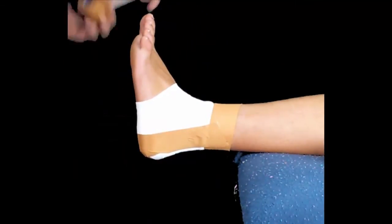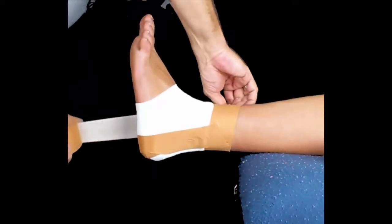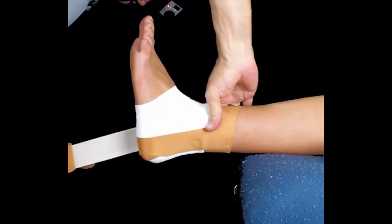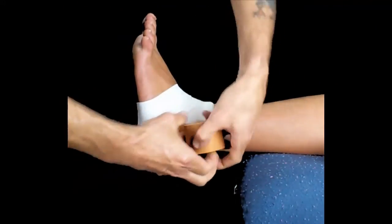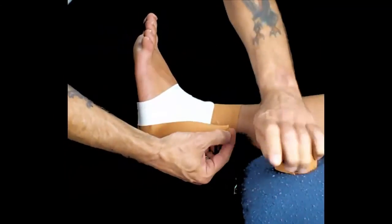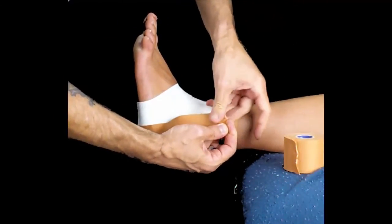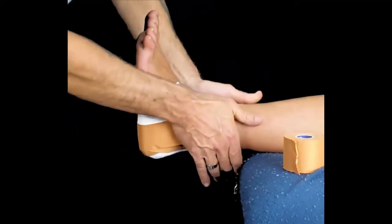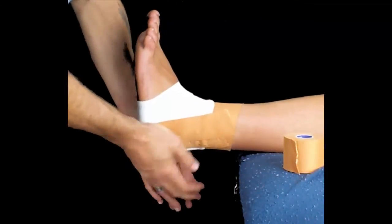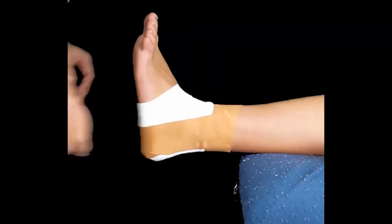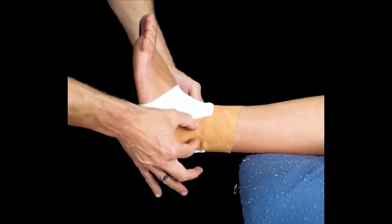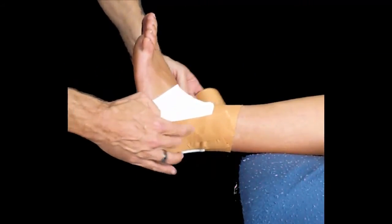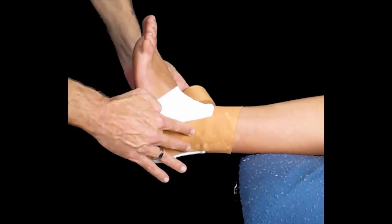Apply a second stirrup overlapping by one half or a third to give it strength. Once again, make sure it's the right tension and take the time to secure it down. We're only using two stirrups and notice that these bumps on the ankle are both completely covered with the two stirrups, so they're supported.